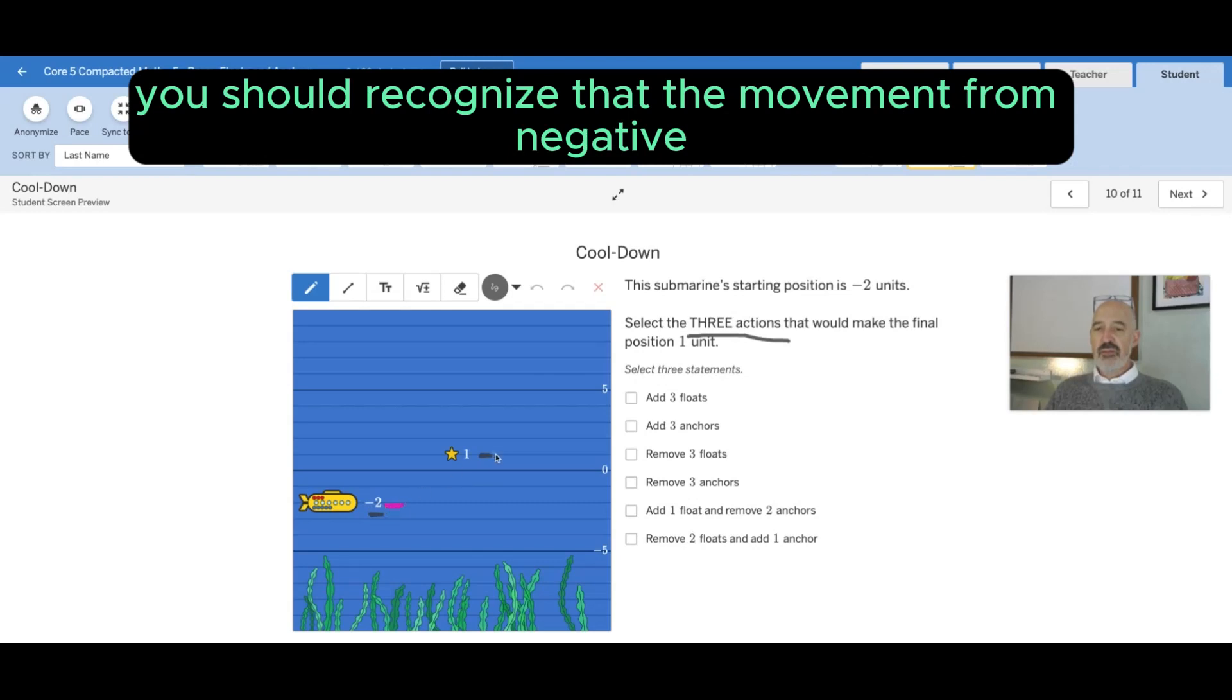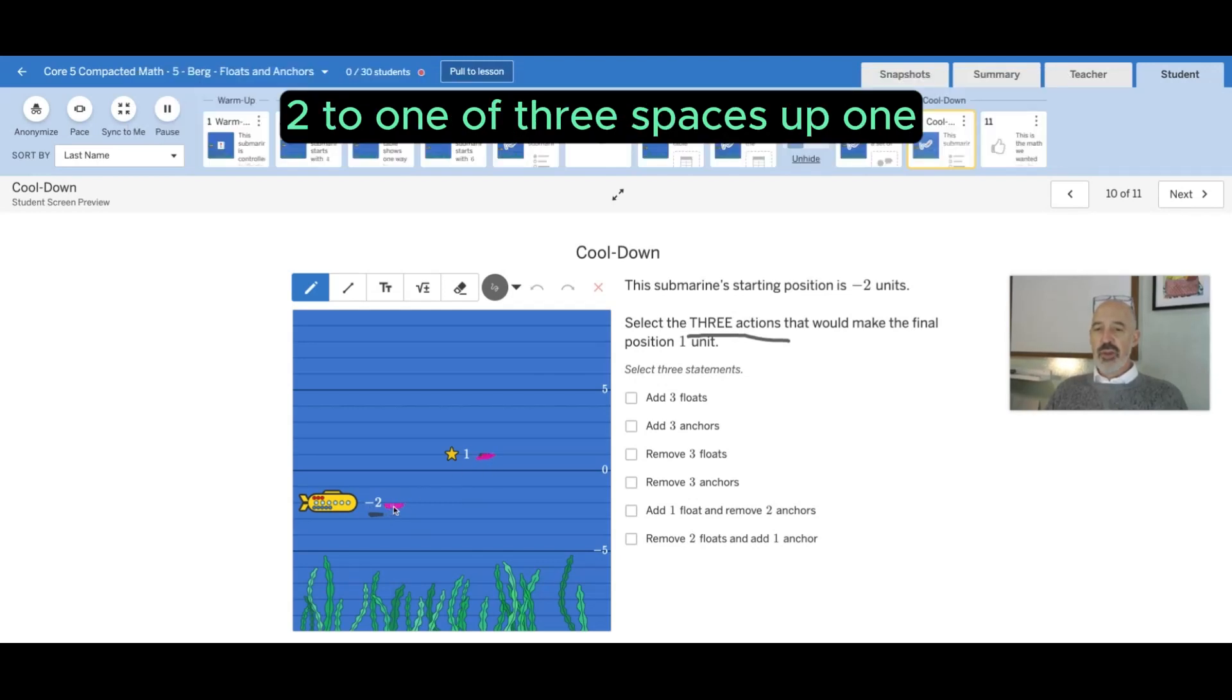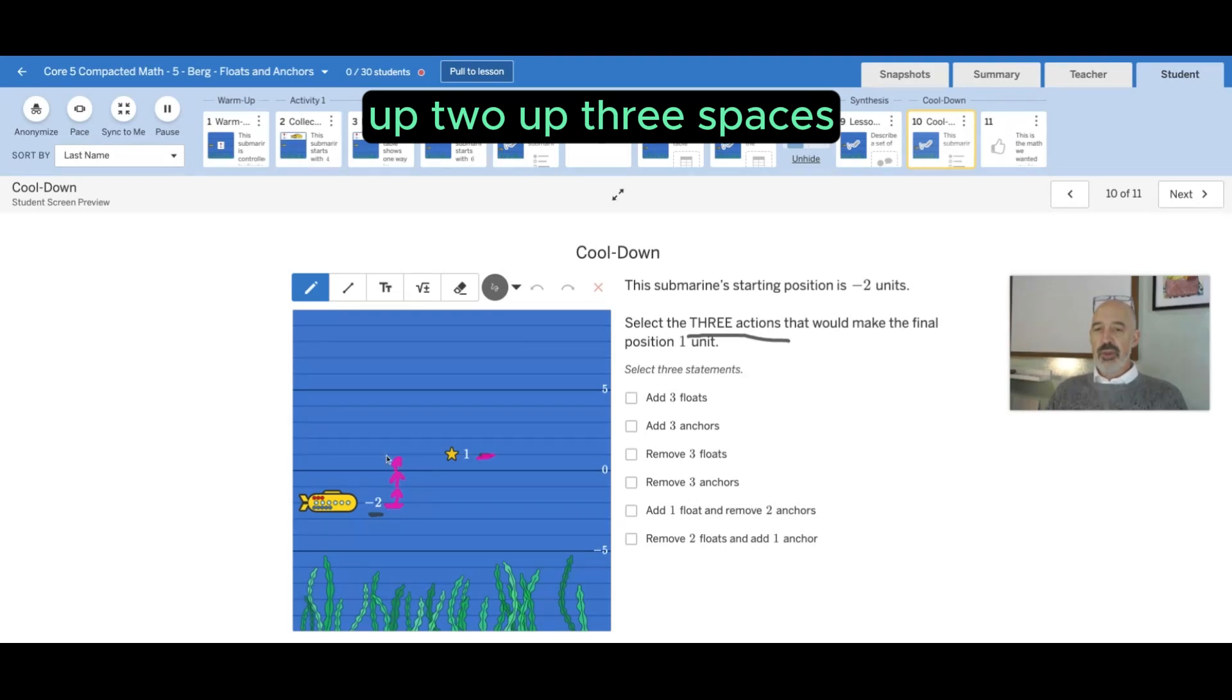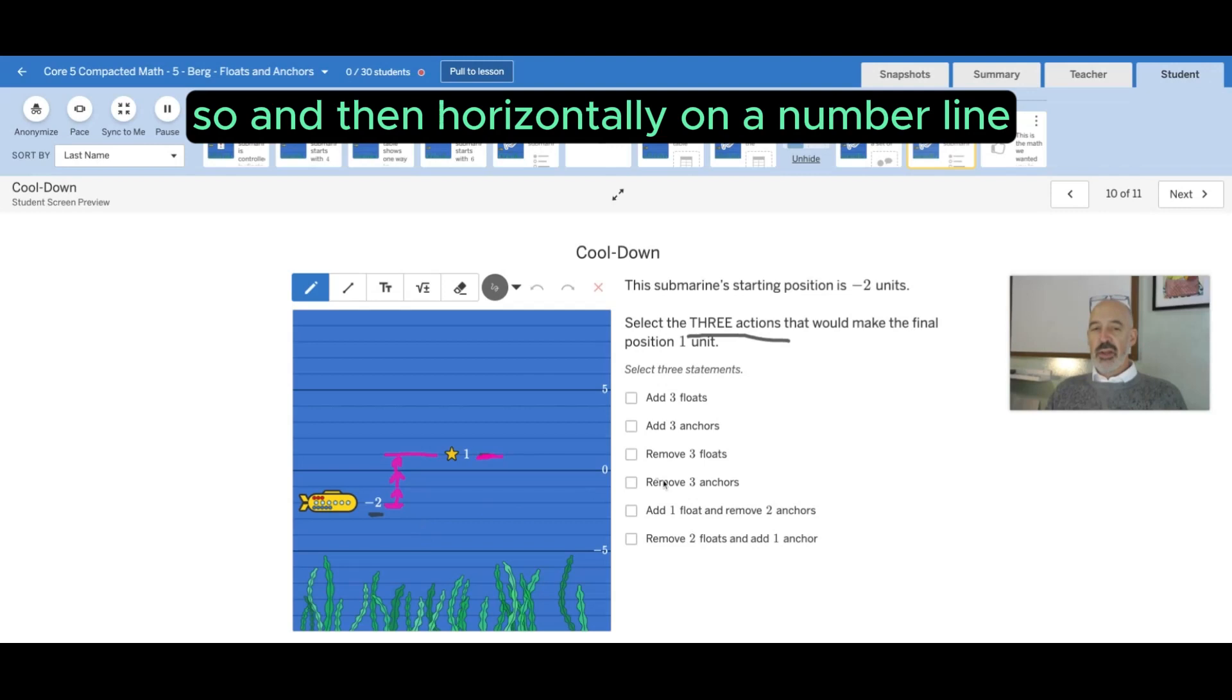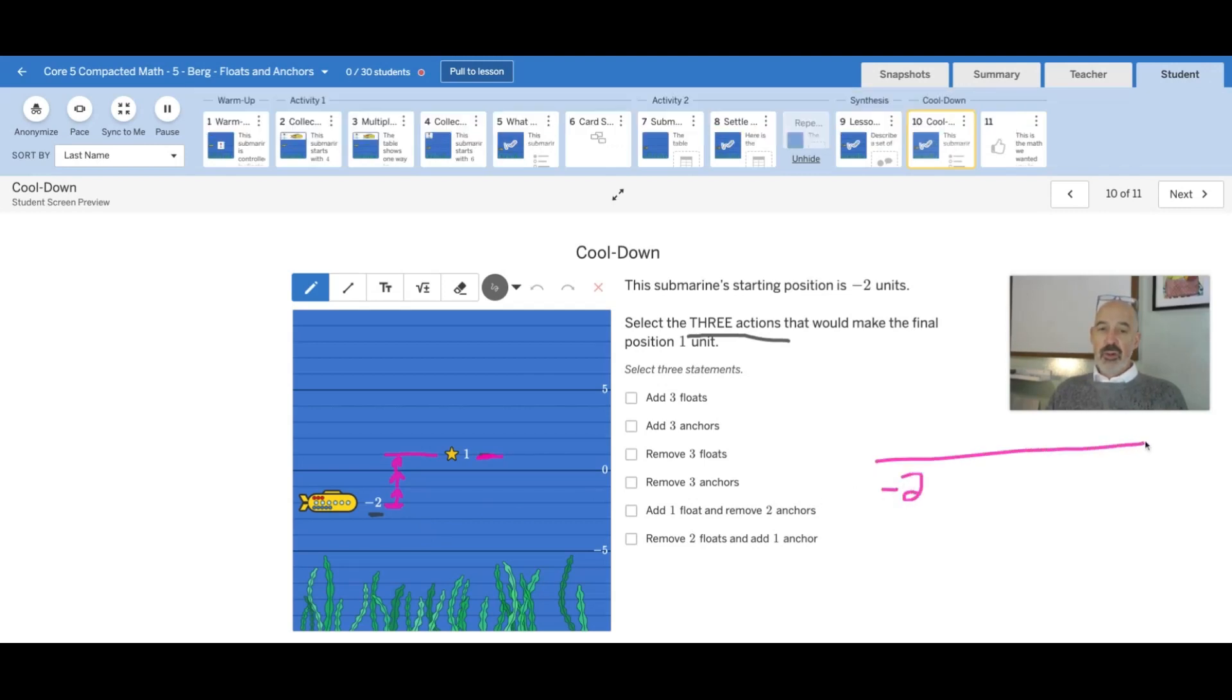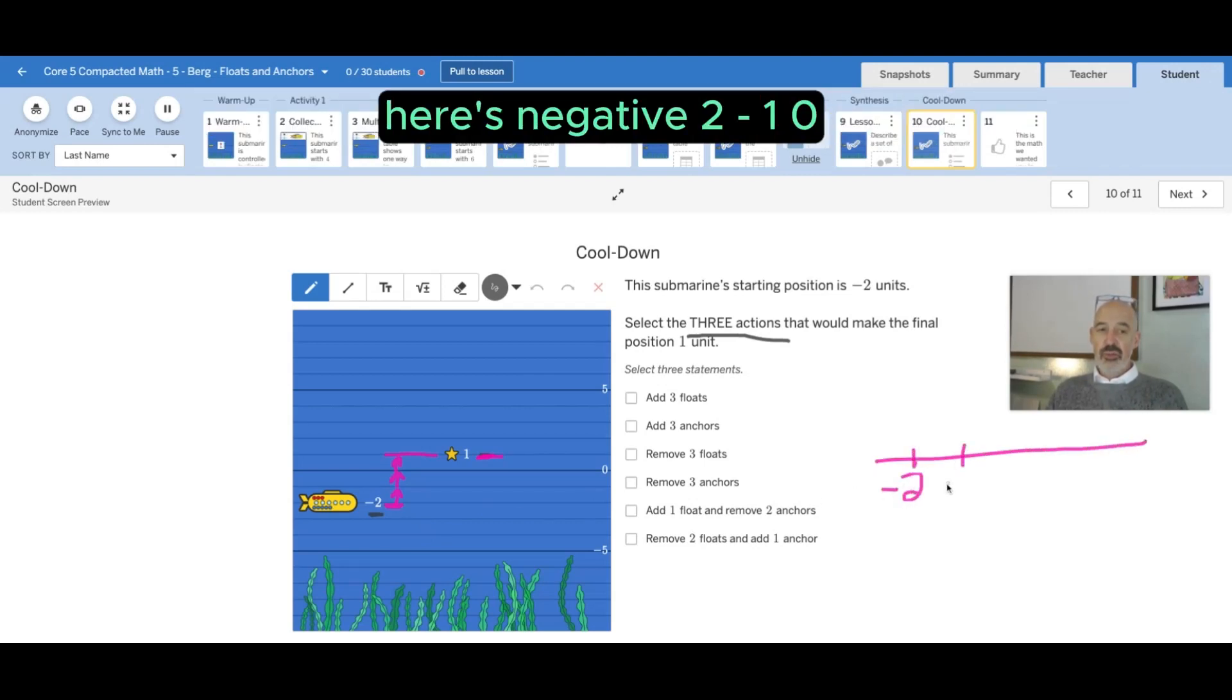It has to go up to one. First of all, you should recognize that the movement from negative two to one is three spaces up: one up, two up, three spaces. That's where the star is at one.